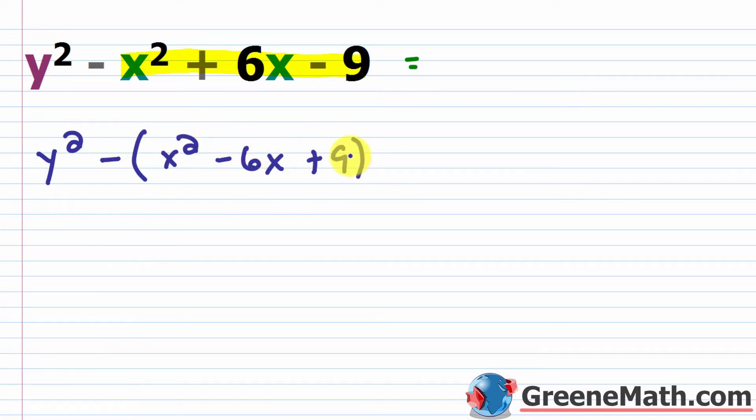If you distribute the minus to each term inside the parentheses, you'll be back to your minus x squared, your plus 6x, and your minus 9.